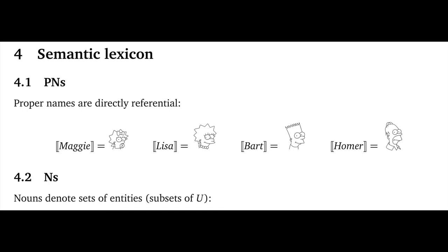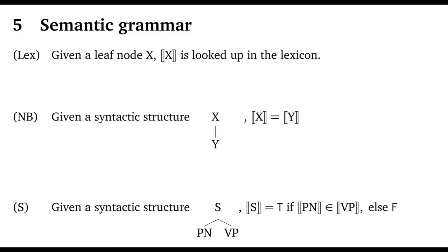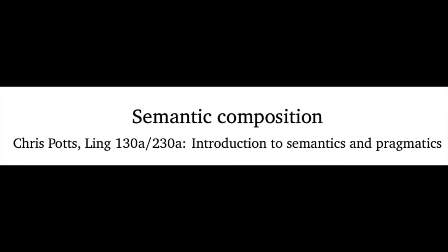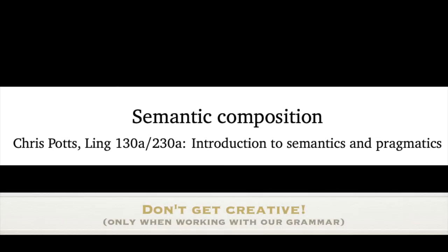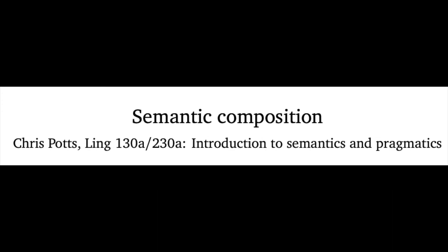We'll make extensive use of these concepts when defining our grammar. Our next step is to build the semantic lexicon — that's where most of the work lies. After that, we define the rules of semantic composition, and then we're off and running as semantic interpreters in the strictest compositional sense. In closing, I want to issue a piece of advice that will sound unusual: don't get creative — at least when working with our grammar. It will pay to be like a mechanical computer, just following literal instructions in a lockstep kind of way. When people guess rather than following the rules, they almost always end up making mistakes. So just for this unit, when working with this grammar, don't get creative.